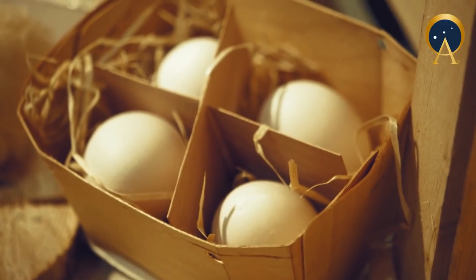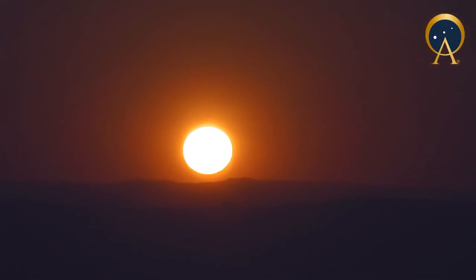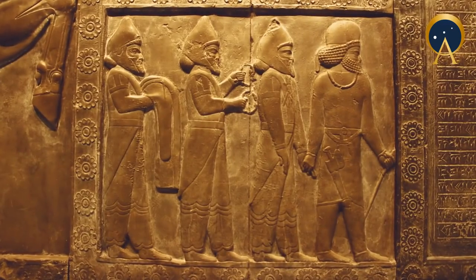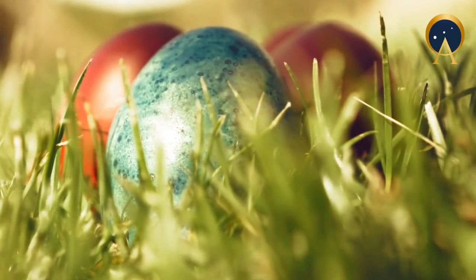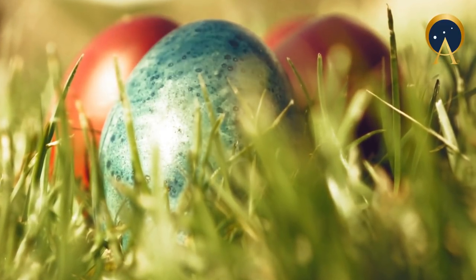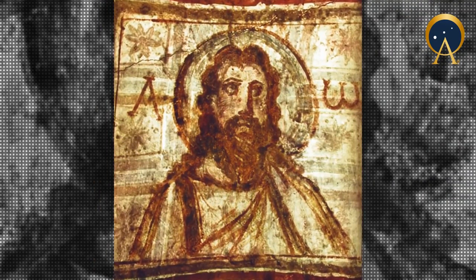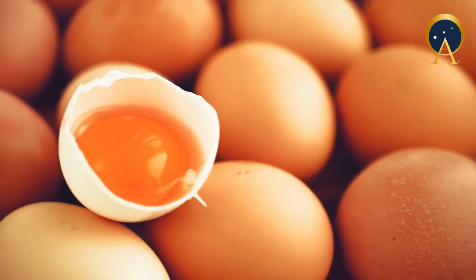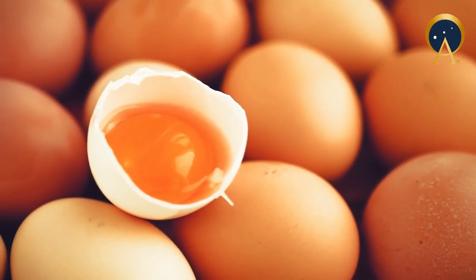The egg is an almost universal symbol of new life. To the ancient Egyptians, the egg symbolized the sun and shining light, while for the Mesopotamians, the egg represented the birth of Ishtar. The ancient Persians also had the custom of coloring and eating eggs during their spring festival. For the early Christians, the egg was a fitting symbol of Jesus' resurrection — a container full of life, which stands empty when cracked open, like his tomb.